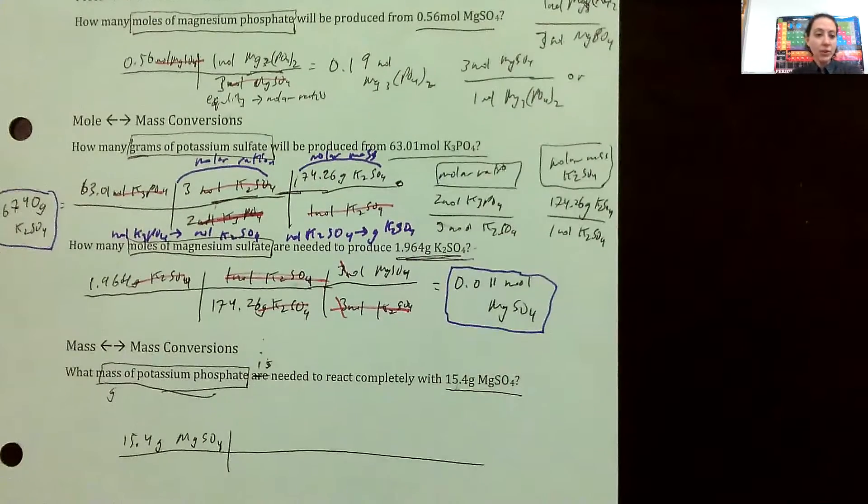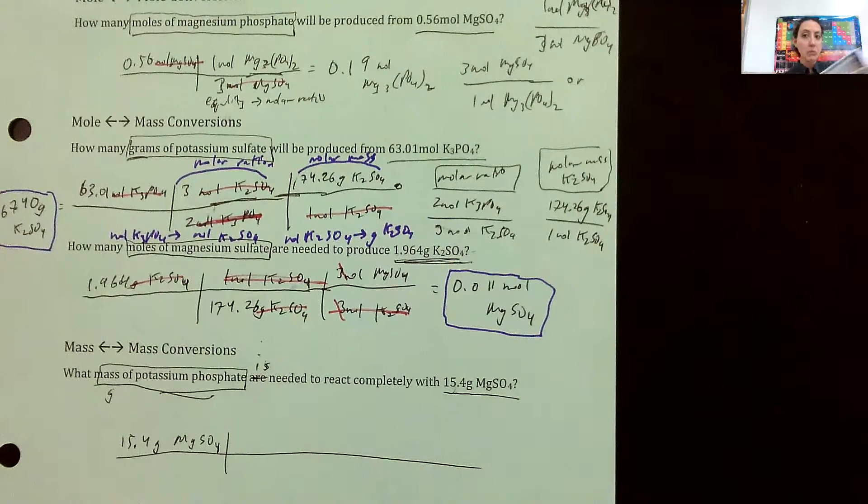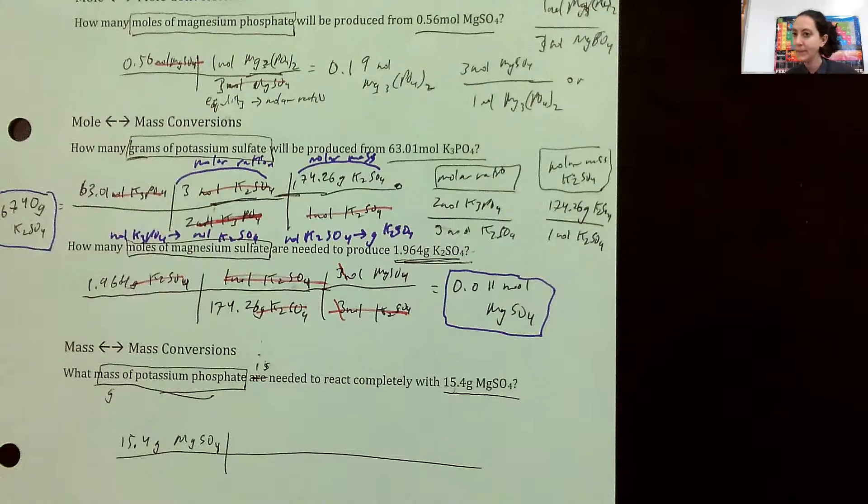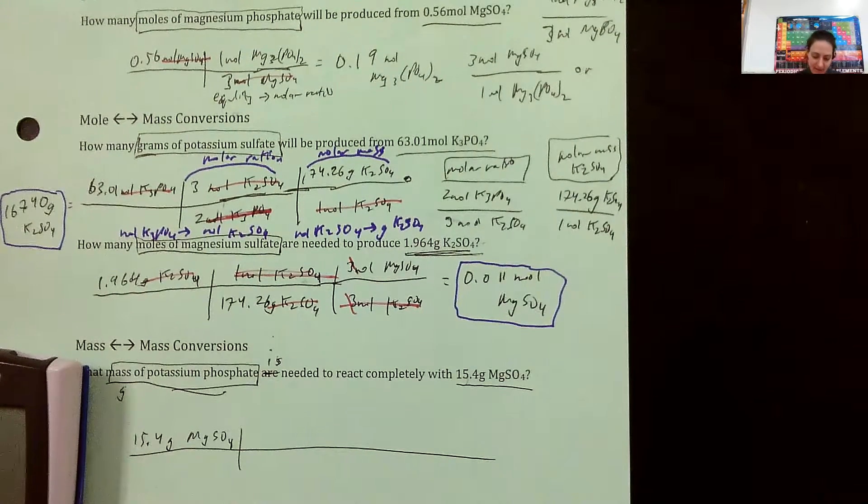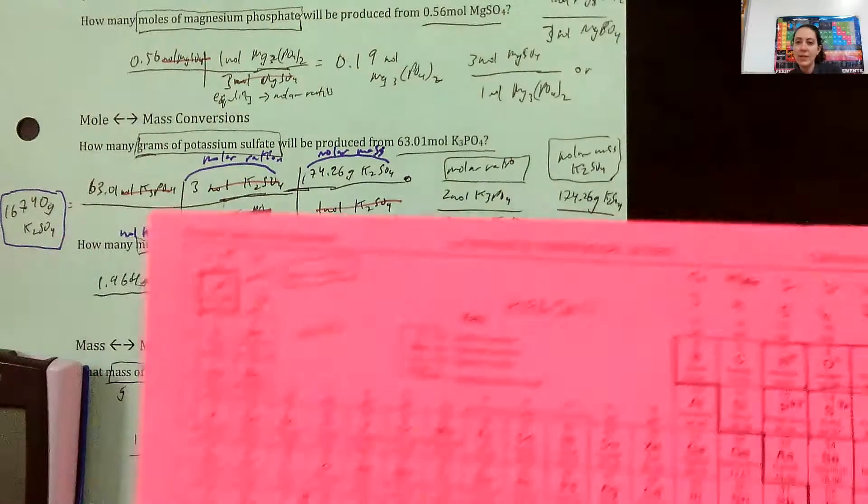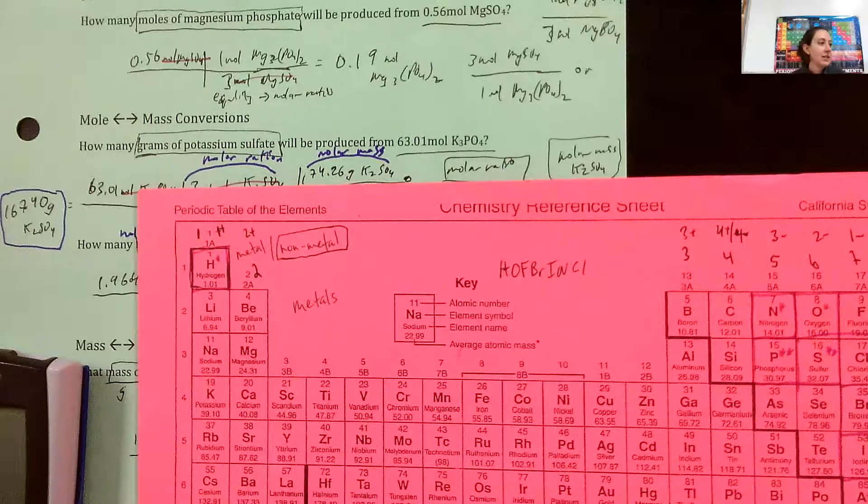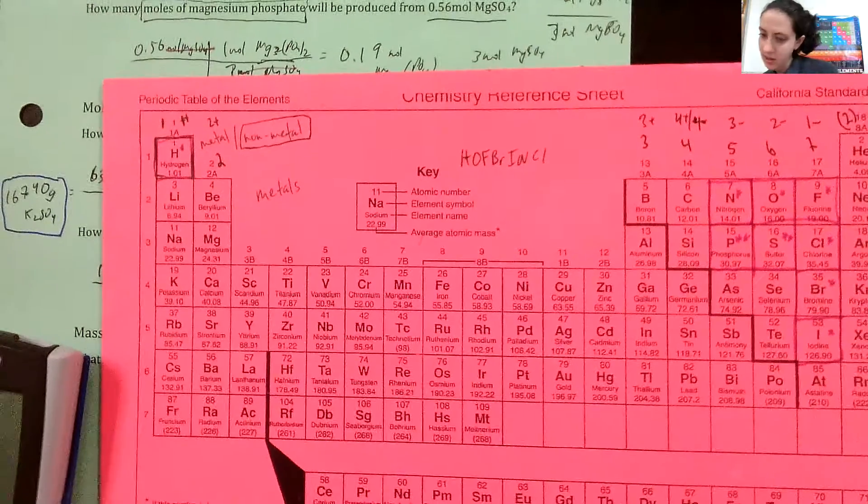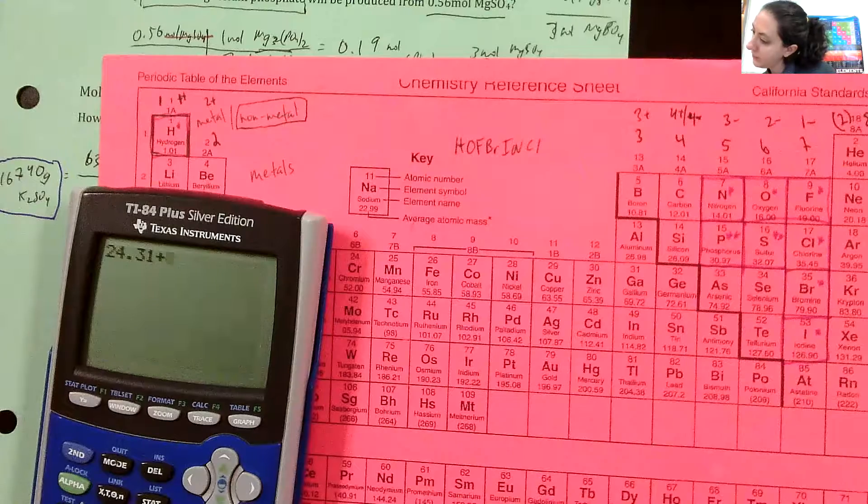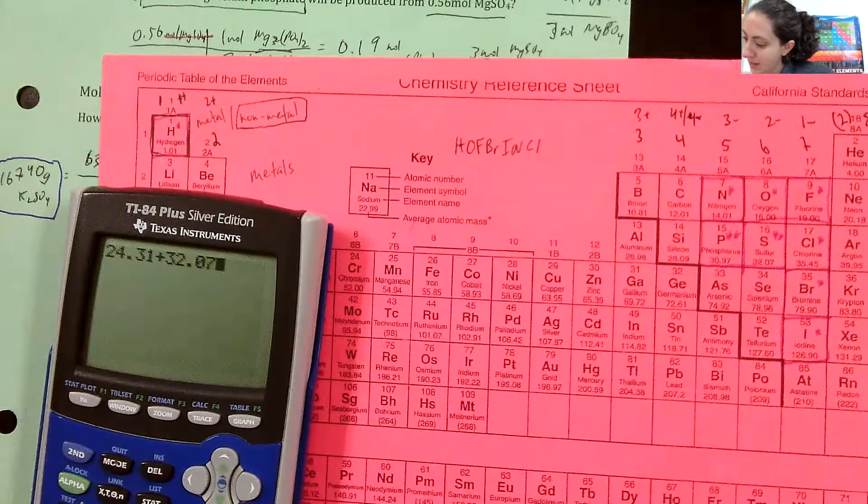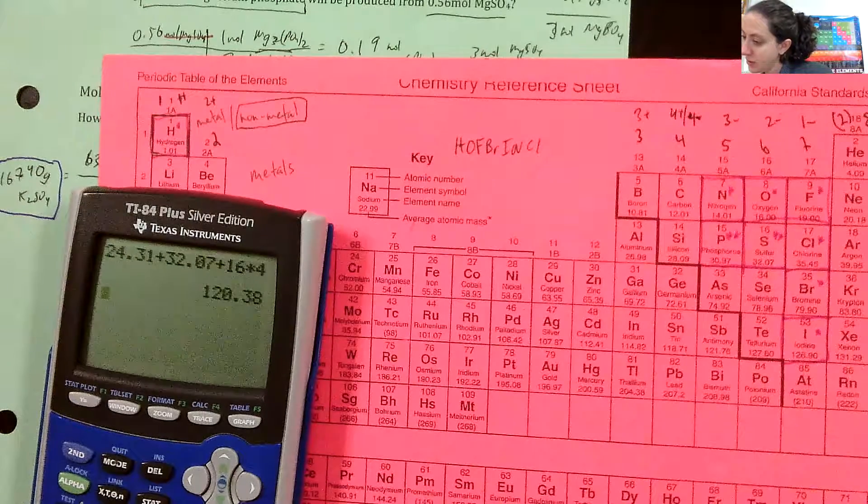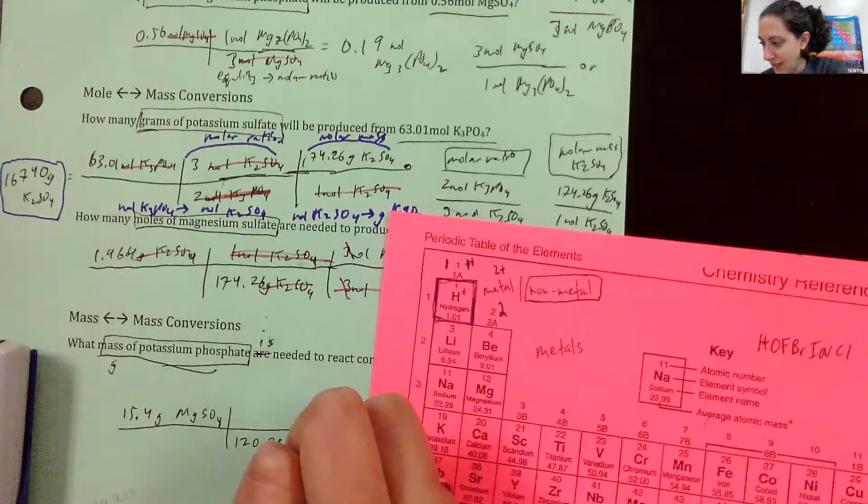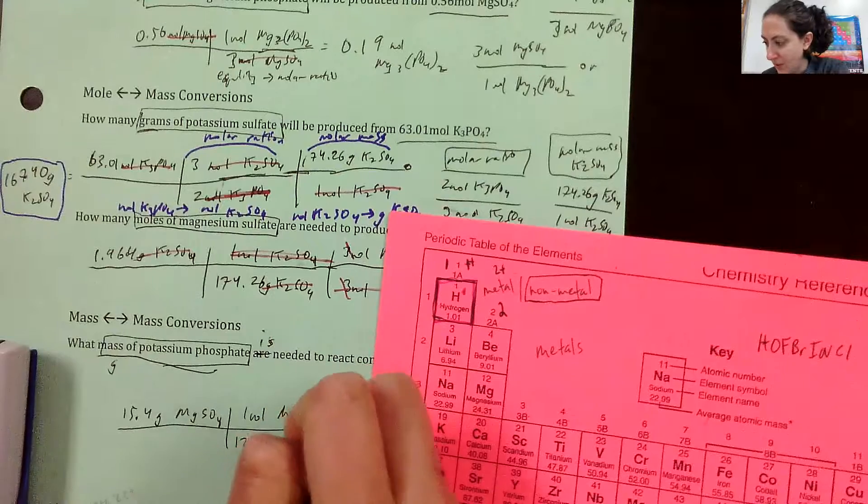We're going to need the molar mass of magnesium sulfate. I don't have that off the top of my head. So let's do a quick calculation. I got my calculator here and I'm going to need my periodic table. Got to have these things handy. Always need a periodic table, always need a calculator. So magnesium sulfate is MgSO4. Mg is 24.31, sulfur is 32.07, and then we're going to have four oxygens. So that's 120.38.